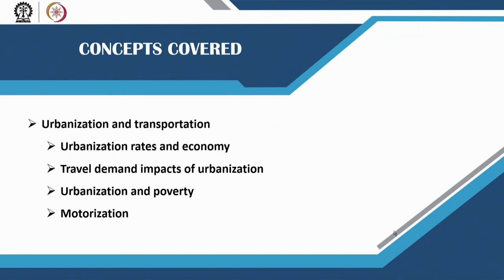In this first lecture we will look at urbanization and its relationship to transportation. We will cover the urbanization rates and how urbanization is impacting the economy, and as a result how the travel demands of citizens living in urban areas are increasing, how urban areas are dealing with poverty, and how transportation helps in alleviating poverty. We will then look at the rate at which motorization is happening in India as a result of urbanization and increase in purchasing power.